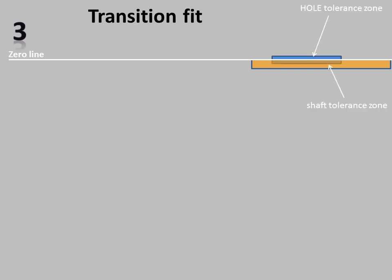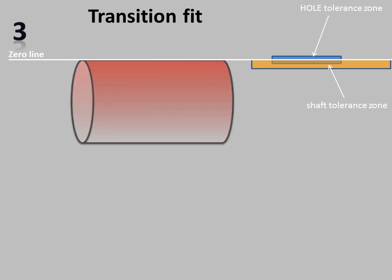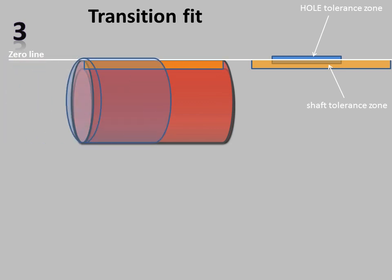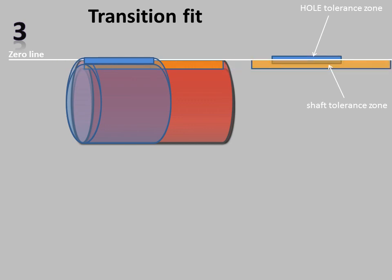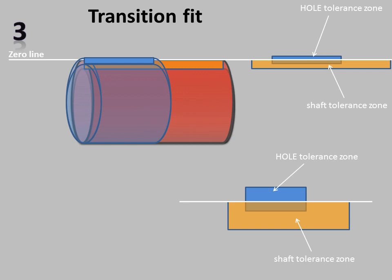This is an example of transition fit. In transition fit, limits of hole and limits of shaft are arranged in such a way that you may get interference fit or may get clearance fit. This is the upper limit of shaft, lower limit of shaft, and tolerance zone of shaft. Similarly, upper limit of hole, lower limit of hole, and tolerance zone of hole. You can see the tolerance zone of hole is overlapping the tolerance zone of shaft. The tolerance zone of hole may overlap completely or partially. Overlapping ensures the possibility of both clearance fit and interference fit.